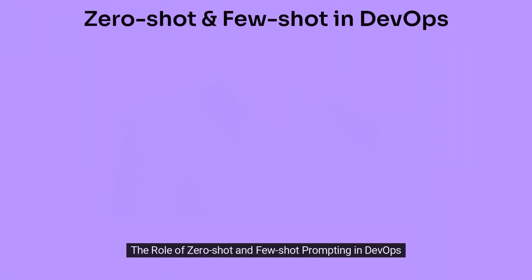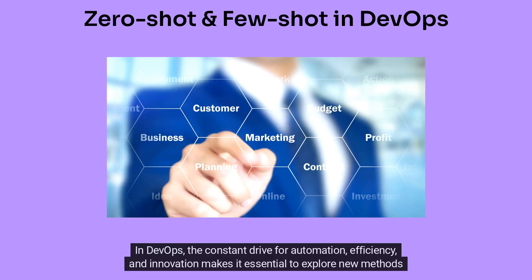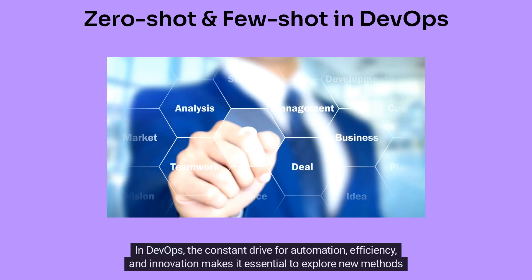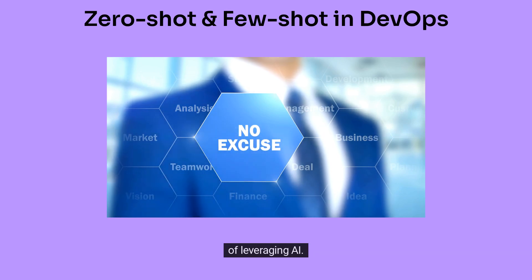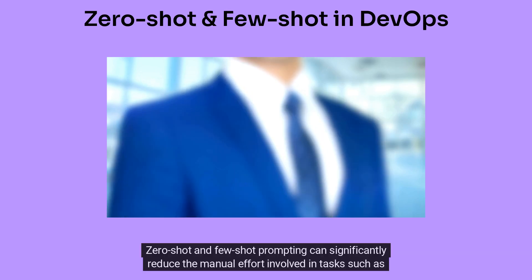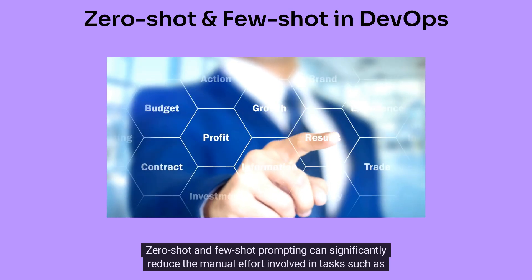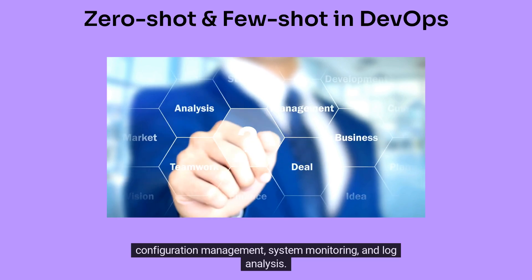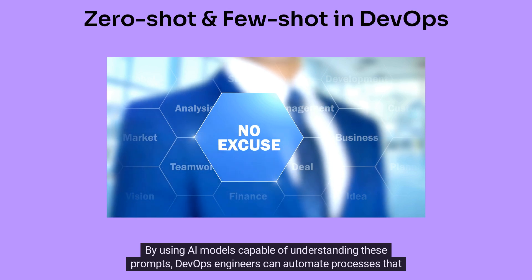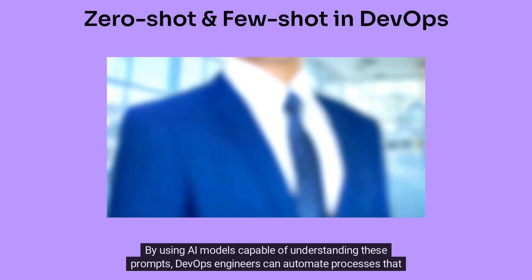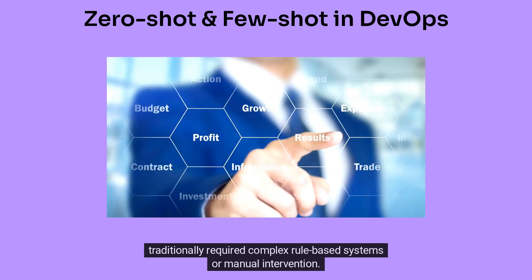The role of Zero-shot and Few-shot Prompting in DevOps. In DevOps, the constant drive for automation, efficiency, and innovation makes it essential to explore new methods of leveraging AI. Zero-shot and Few-shot Prompting can significantly reduce the manual effort involved in tasks such as configuration management, system monitoring, and log analysis. By using AI models capable of understanding these prompts, DevOps engineers can automate processes that traditionally required complex rule-based systems or manual intervention.